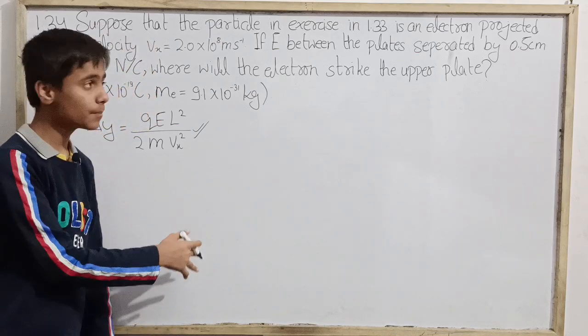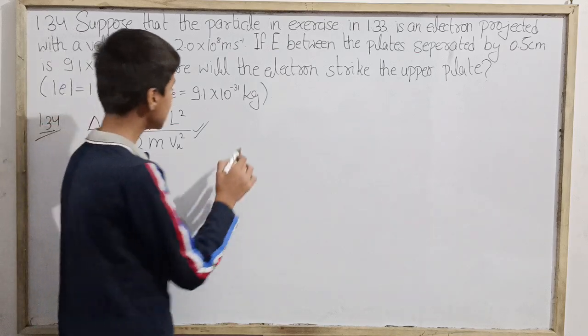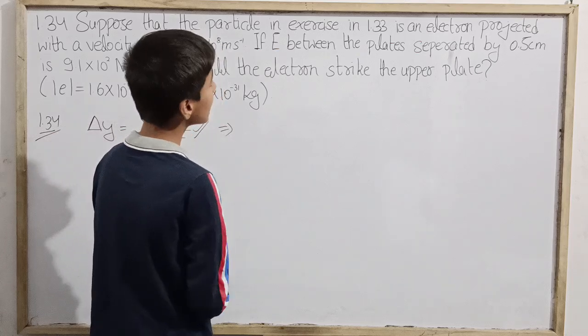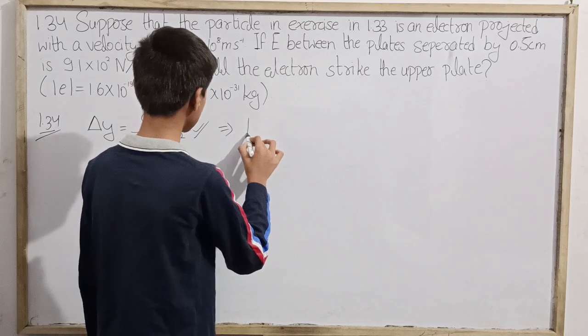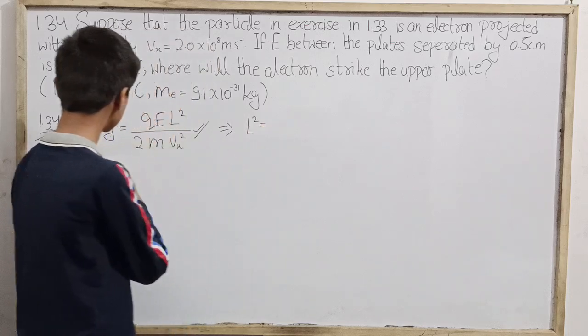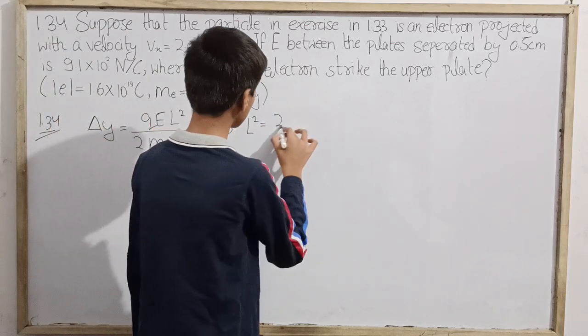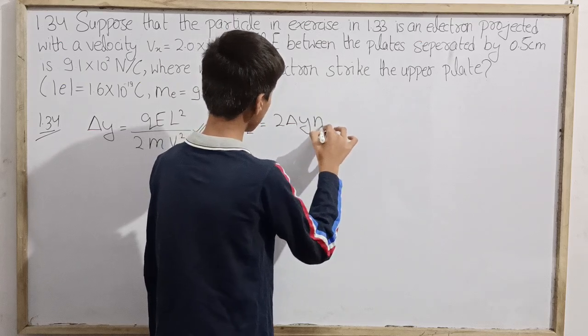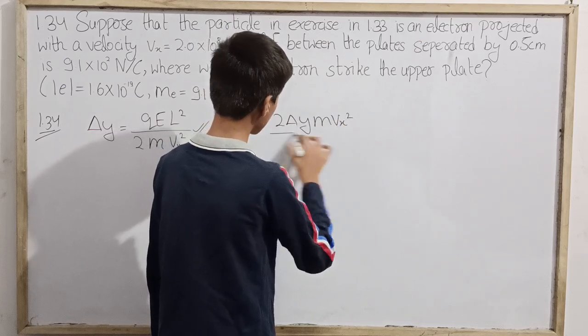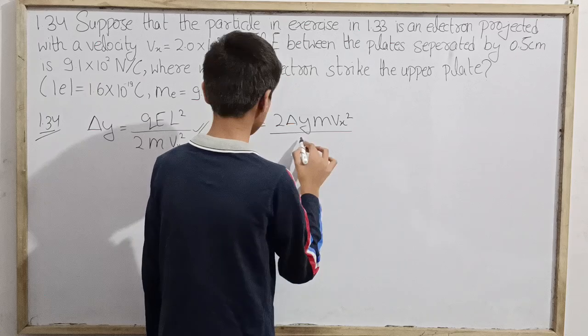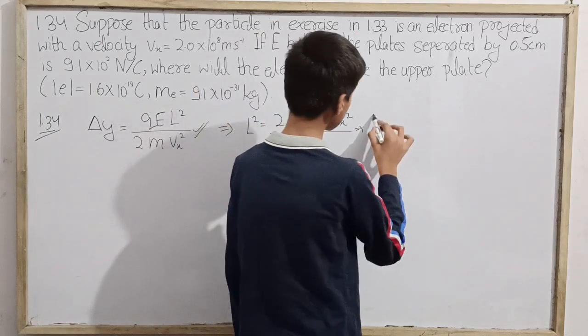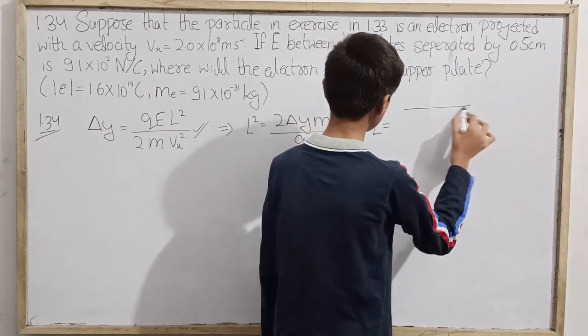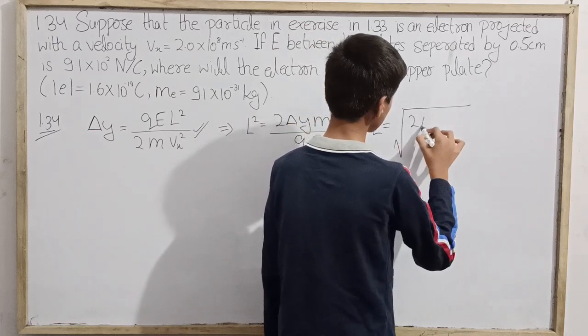In this case it's for an electron. If we rearrange the equation, l^2 equals 2*delta_y*m*vx^2 over q*e. That means l, if we have to find it, this is the square root of 2*delta_y*m*vx^2 over q*e.